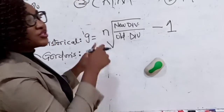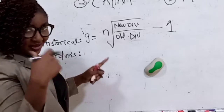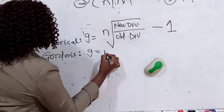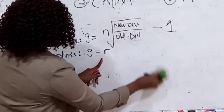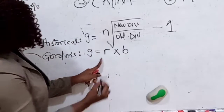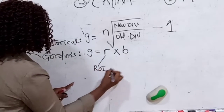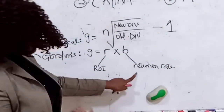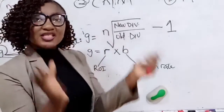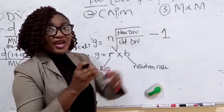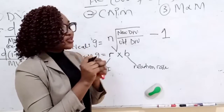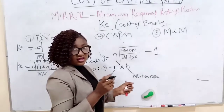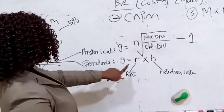The second method to determine growth is Gordon's approach. That one simply says: multiply the return on investment by the retention rate. The retention rate is how much the company keeps out of its earnings. For example, if earnings per share is 5 Naira and you pay out 3 Naira, you retained 2 Naira — that is 2 over 5, which is 40%. So the retention rate is 40%. That is how to get your growth using Gordon's method.